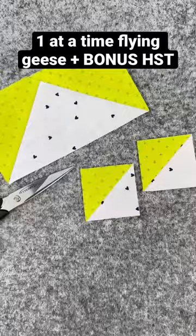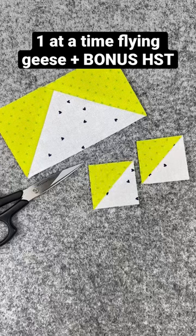And then you end up with one flying geese and two half square triangles. Check out the full tutorial on my channel.